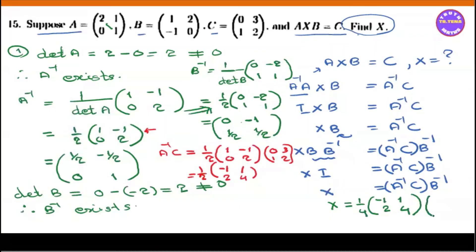Now you can see this matrix: zero, minus two, one, one. Zero, minus two, one, one. If you look at the matrix entries, one over four, one over four, and two. The rule gives: minus one, zero, one, one.